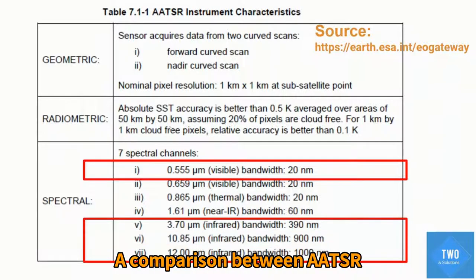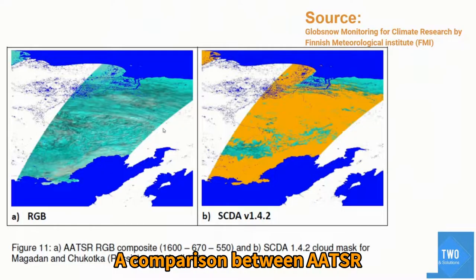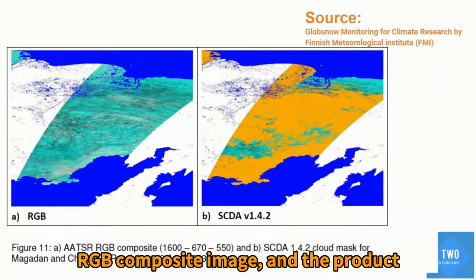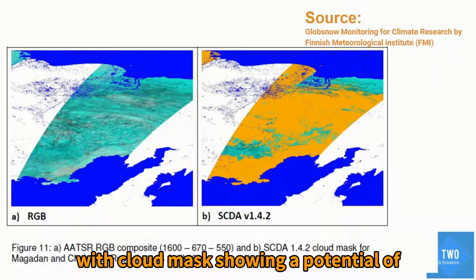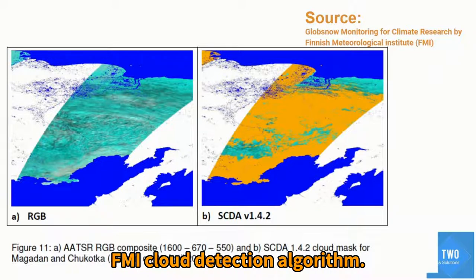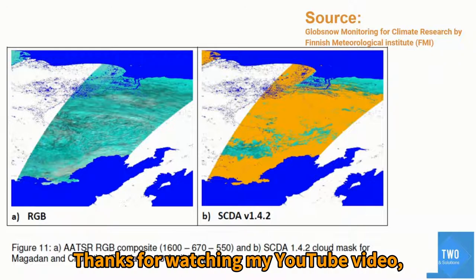A comparison between the AATSR RGB composite image and the product with a cloud mask shows the potential of the FMI cloud detection algorithm.